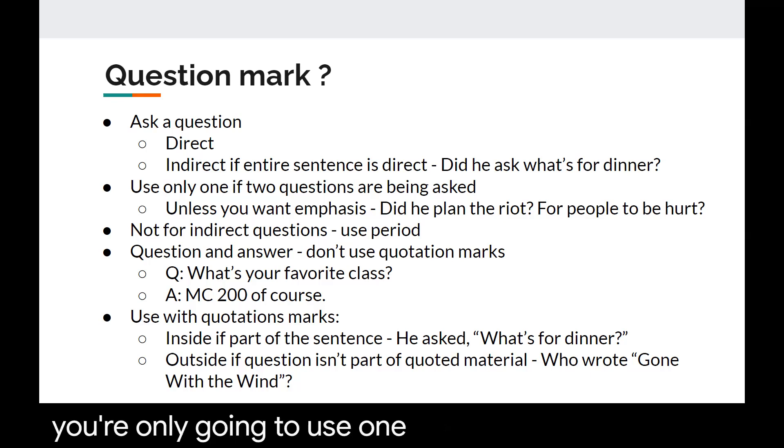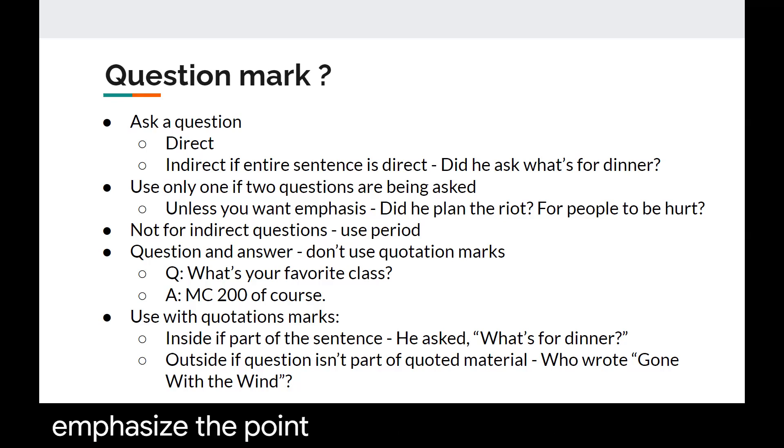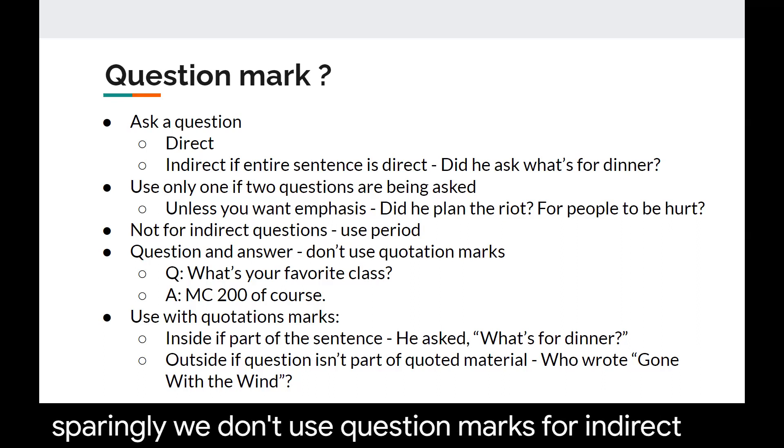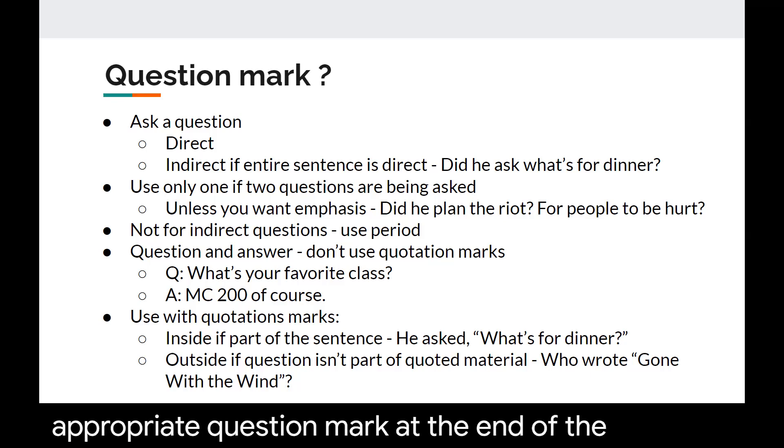You're only going to use one question mark most of the time even if two questions are being asked. The difference is if you want emphasis such as did he plan the riot for people to be hurt? Like you're trying to emphasize the point that planning a riot would involve people getting hurt and so therefore you might separate it out with two question marks but do this sparingly. We don't use question marks for indirect questions which we just talked about and in a question and answer format you're not going to use quotation marks. Instead you will use colons after the Q and A and then the appropriate question mark at the end of the direct question.